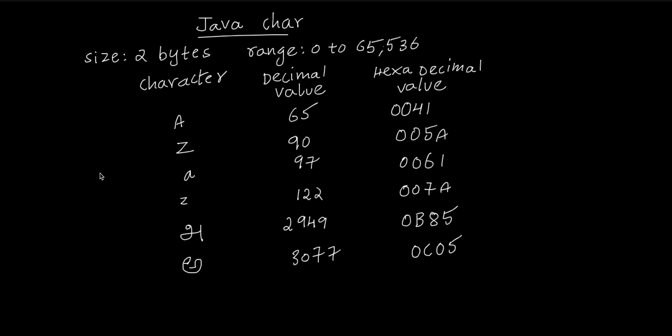We want to print characters such as capital A, small A, capital Z, small Z, Tamil R, and Telugu R. In the machine, each character is represented by a decimal value or hexadecimal value. In Java, char is a primitive data type with a total size of 2 bytes.